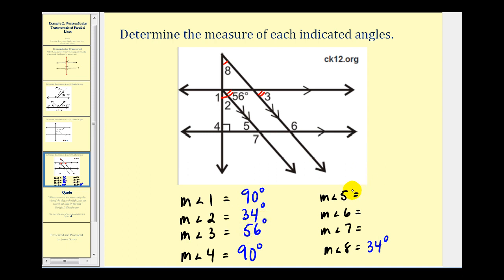Now let's take a look at angles five, six, and seven. Looking at the horizontal parallel lines, this angle here that measures fifty-six degrees is an alternate interior angle with angle five, which means they're congruent, so the measure of angle five would be fifty-six degrees.